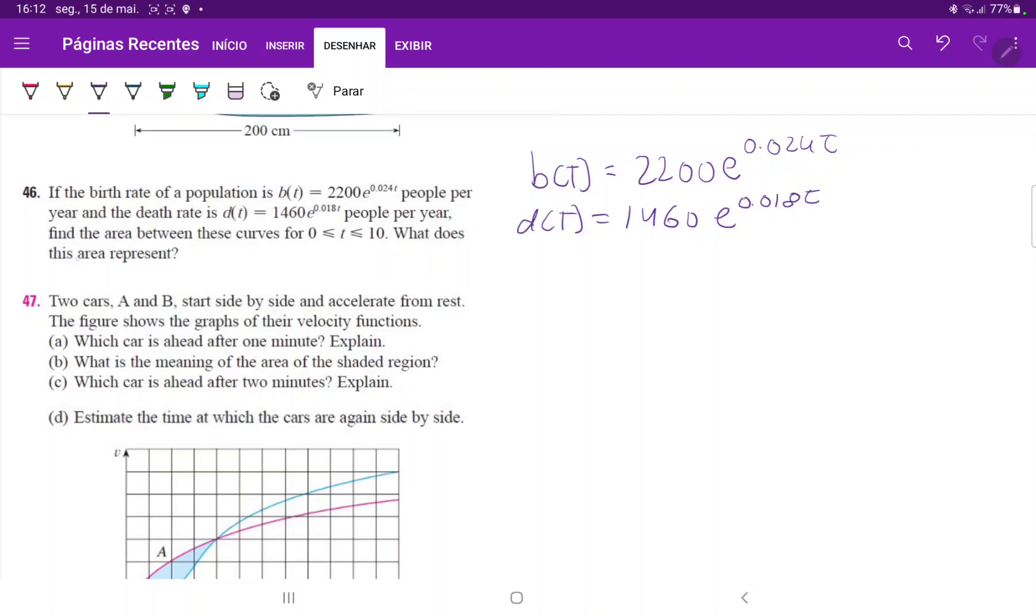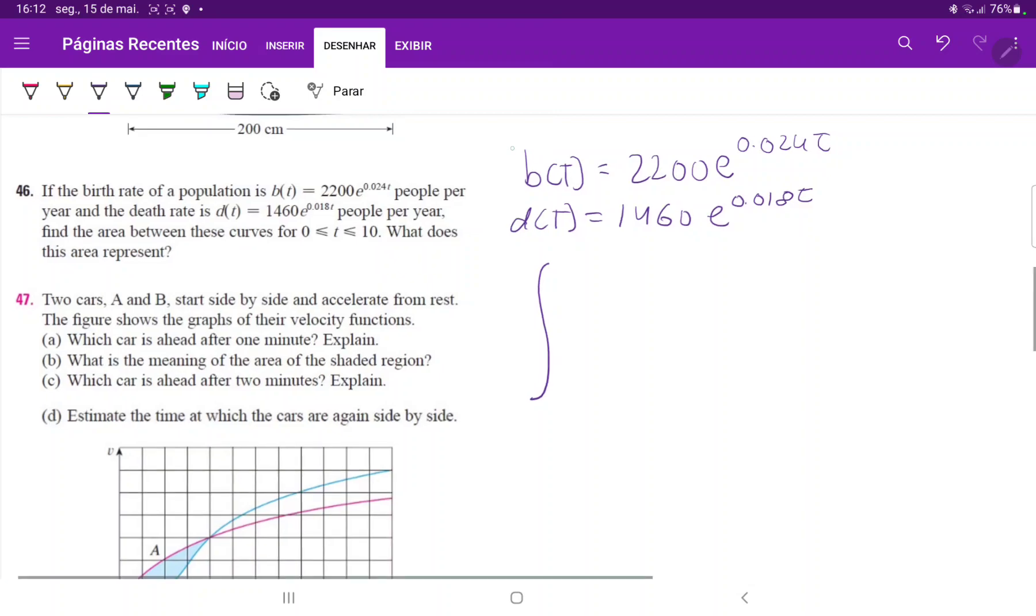Okay, then it's asking, find the area between these curves between 0 and 10. So because the birth rate is greater than the death rate,